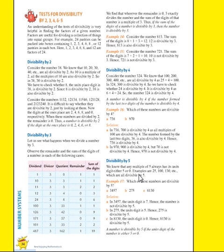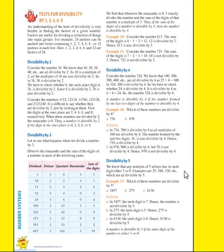Next, see the divisibility by 5. We know that any multiple of 5 always has its units digit either 5 or 0. The number at the units place — either it is 5 or 0. It means the last digit is 0 or 5. Then we can say that the given number is divisible by 5. For example, 25, 100, 130, etc. are all divisible by 5 because the units digit is either 5 or 0. So we have to check the units digit — it should be either 0 or 5.